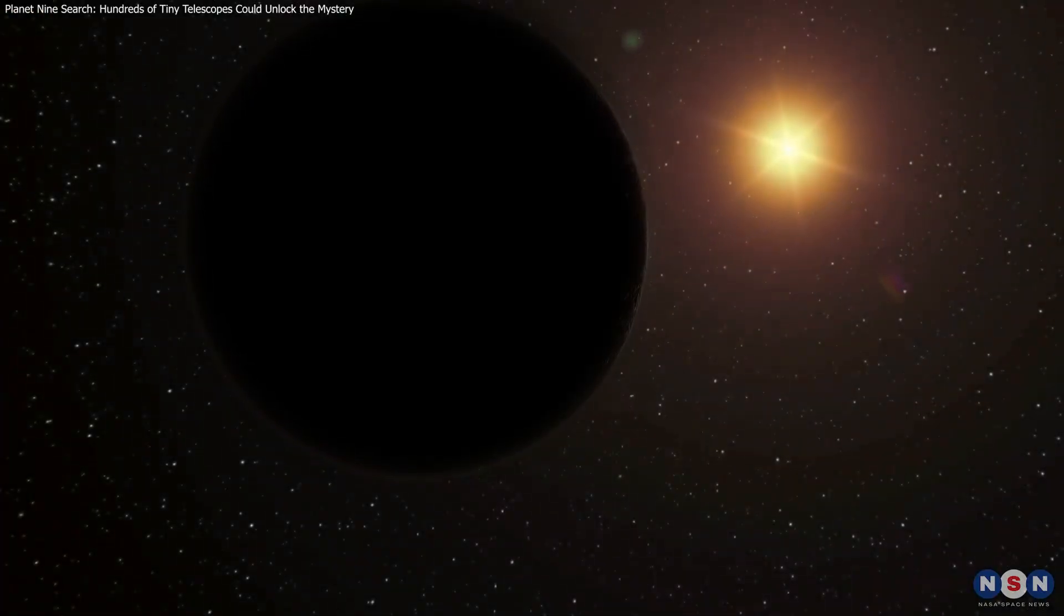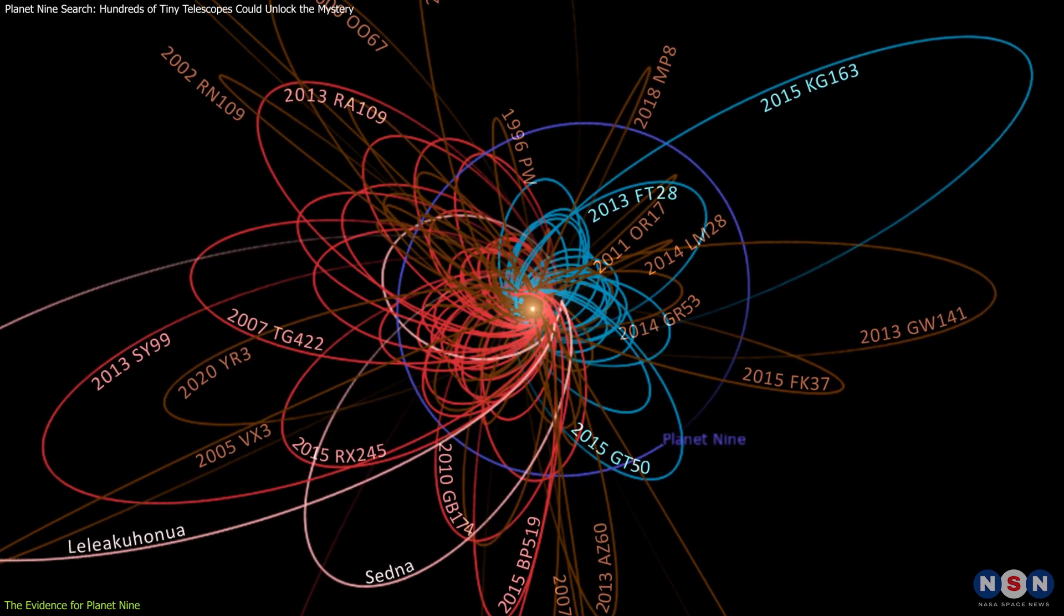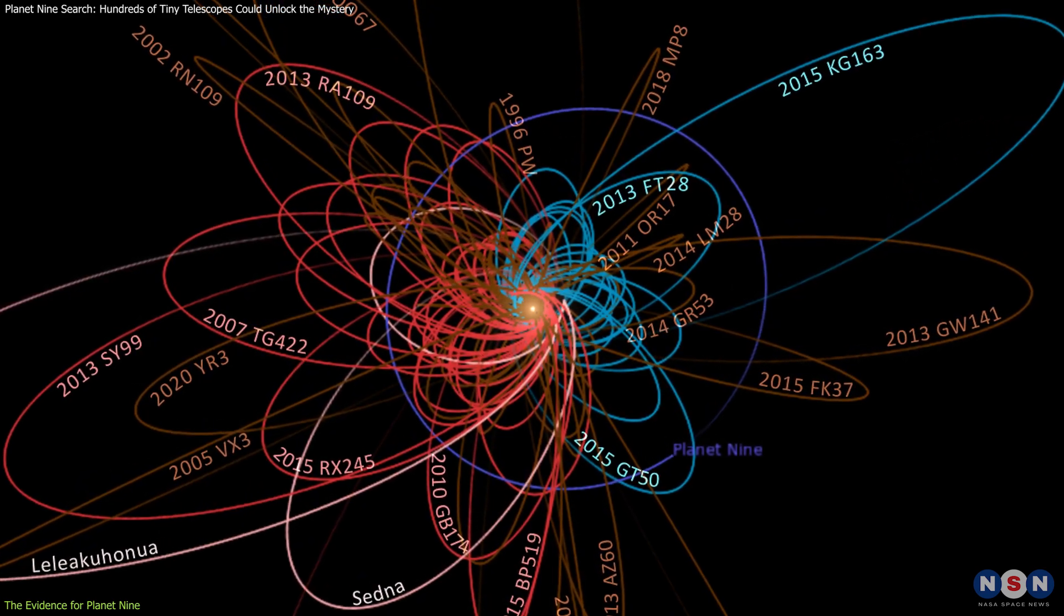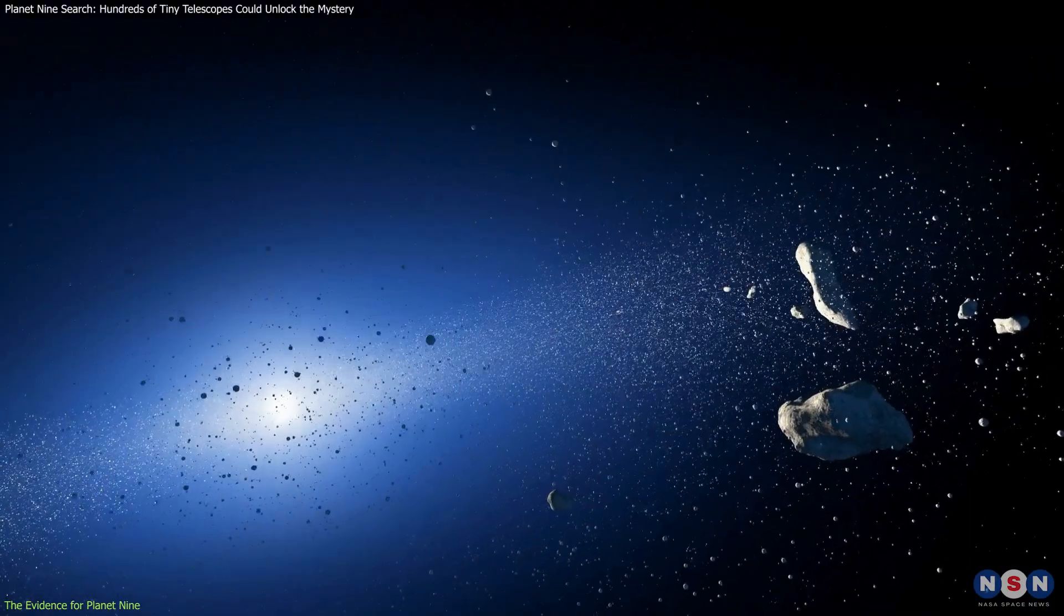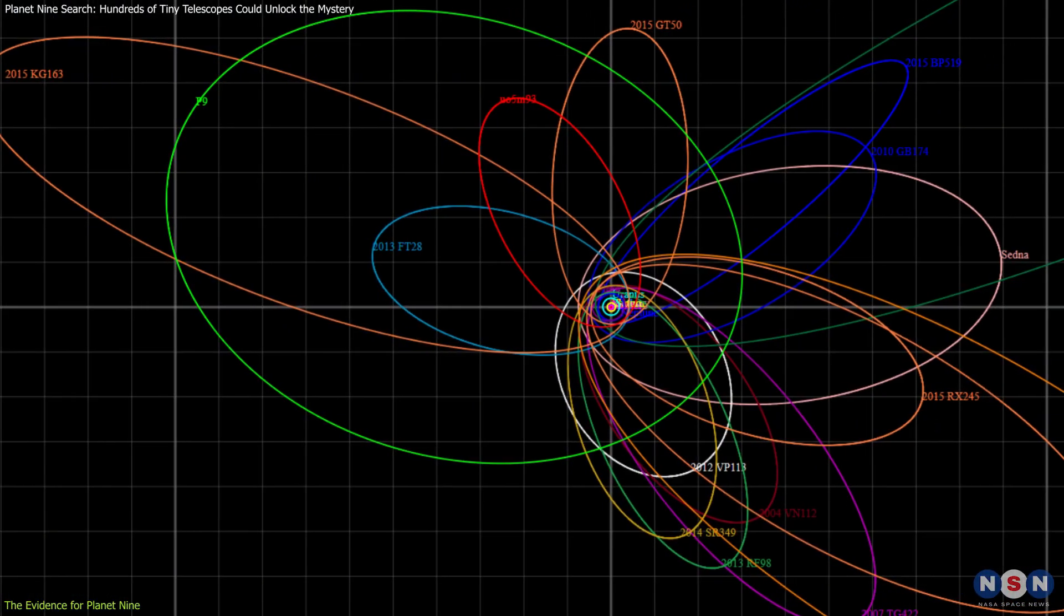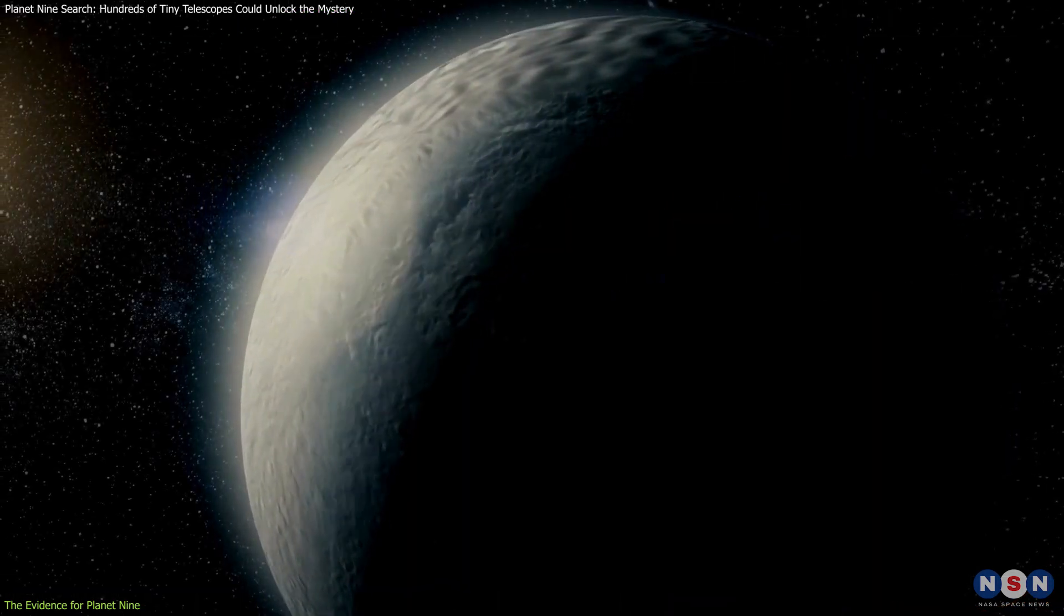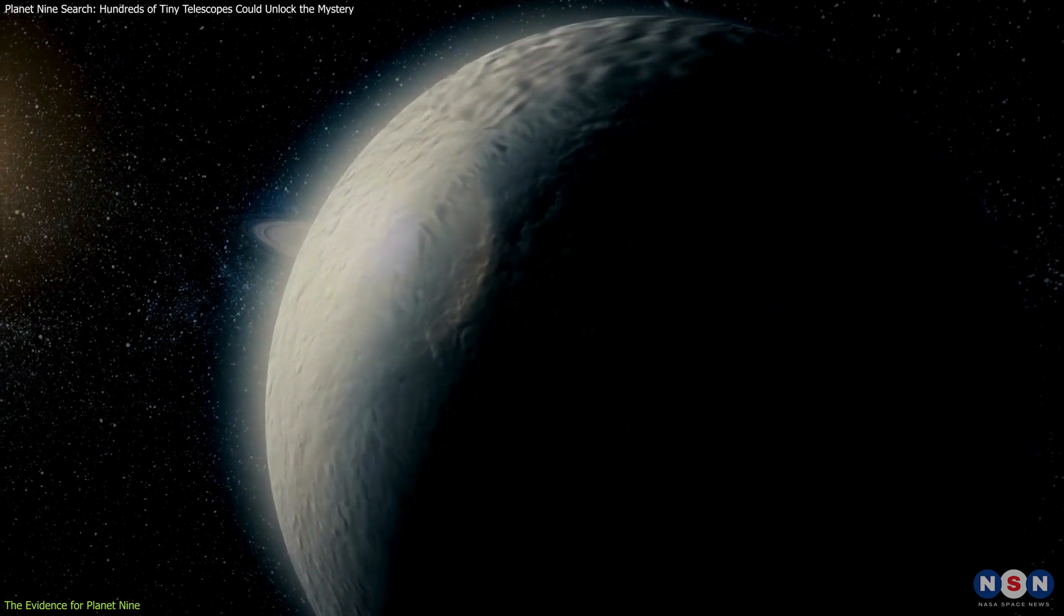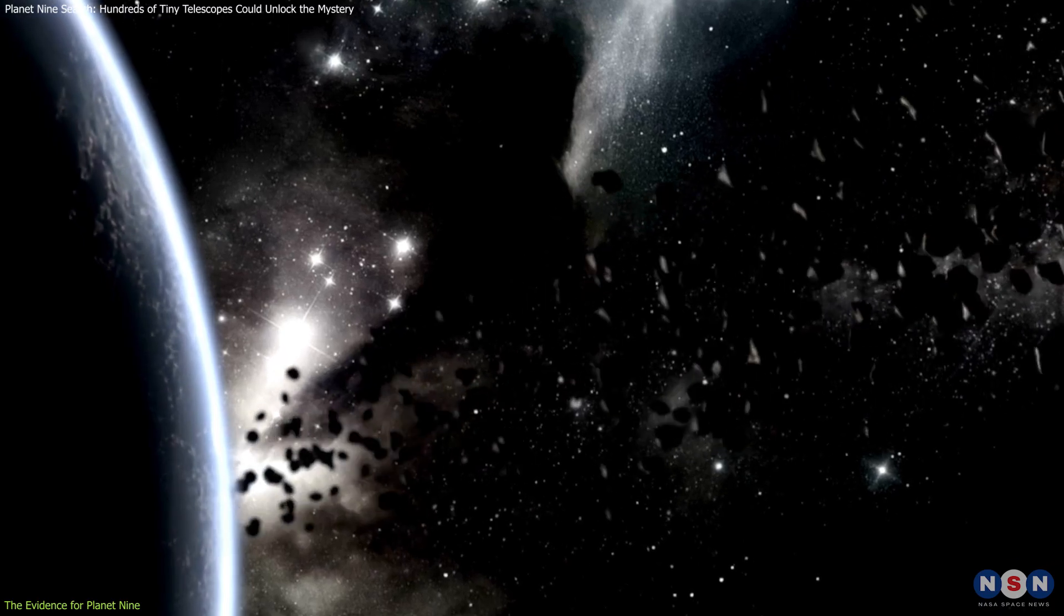The idea of Planet 9 first arose from peculiar patterns observed in the orbits of trans-Neptunian objects, or TNOs, celestial bodies far beyond Neptune. Researchers noted that these TNOs exhibited a clustering effect where their orbits aligned in a way that couldn't be explained by chance alone. This led astronomers to hypothesize the existence of a massive, unseen planet exerting gravitational influence on these distant objects.